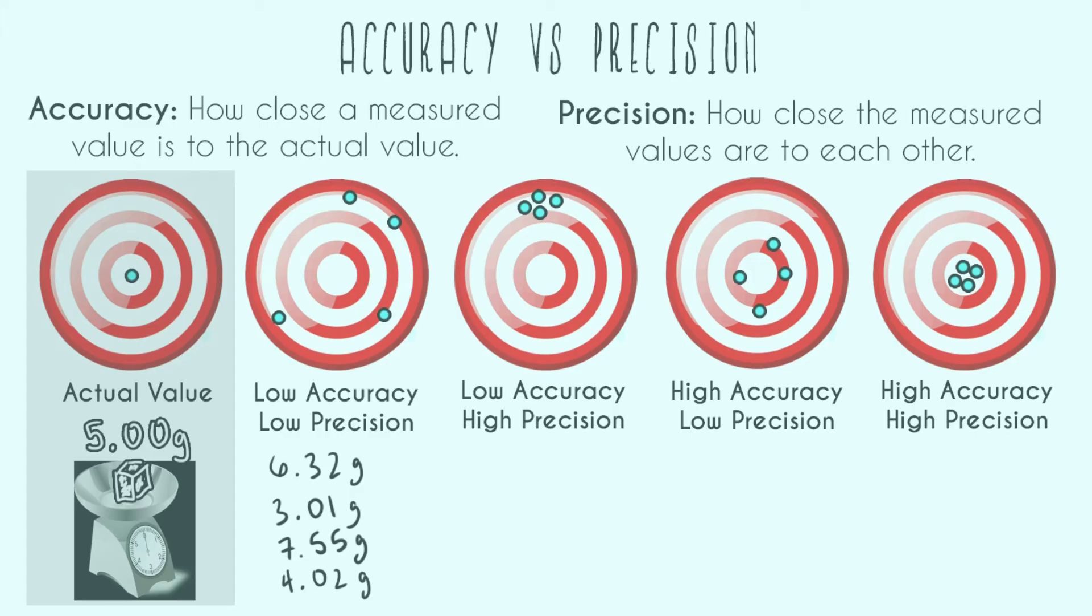So now let's do the next one, which is low accuracy. So it's still not going to be close to five grams, but it's high precision. We got 8.32 grams, 8.35 grams, 8.29 grams, and 8.32 grams.